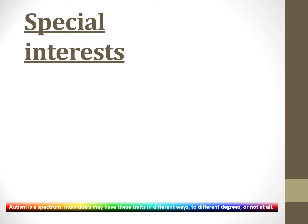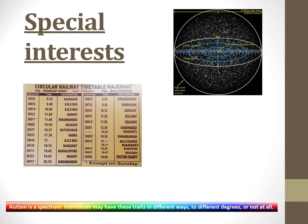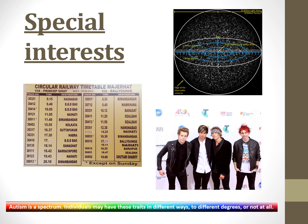Special interests: many autistic people have an intense interest in a particular subject — it could be anything, maybe railway timetables, maybe astrological distances. The strange thing is that special interests like these are considered weird and nerdy, whereas other obsessions such as boy bands are considered perfectly normal, so long as you're a teenage girl.